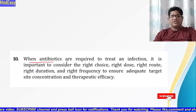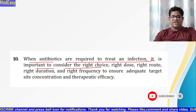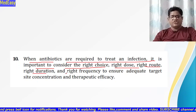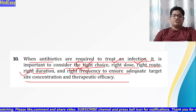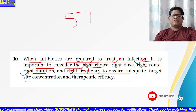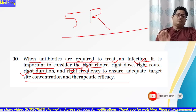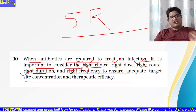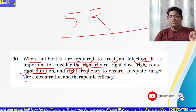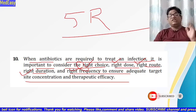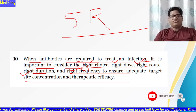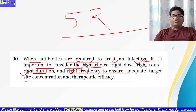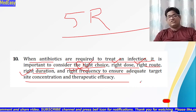Principle ten: when antibiotics are required to treat an infection, always consider the five rights — right choice, right dose, right route, right duration, and right frequency — to ensure adequate target-site concentration and therapeutic efficacy. The right drug of choice for a particular disease, the right dose, whether the route is IV, intramuscular or continuous infusion, the right duration of how long to prescribe, and the right frequency — 8-hourly or 12-hourly — must all be followed.